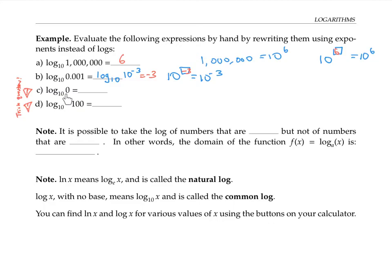Log base 10 of zero is asking what power do we raise 10 to, to get zero. There's no way to raise 10 to an exponent and get zero. Raising 10 to a positive exponent gets us really big positive numbers. Raising 10 to a negative exponent gives us tiny fractions — still positive numbers, never zero. Even raising 10 to the zero power gives us one. So there's no way to get zero, and log base 10 of zero does not exist. If you try it on your calculator using the log base 10 button, you'll get an error message.